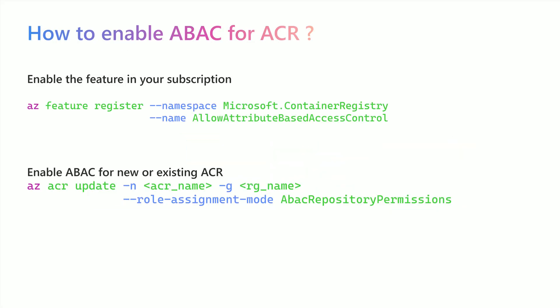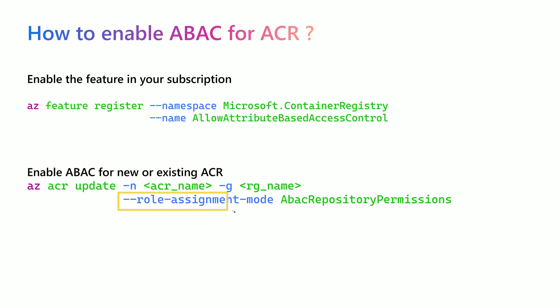This feature is not yet enabled by default — you need to enable it explicitly. There are just two steps. First, you enable the Azure feature for attribute-based access control. Then you enable the feature on your ACR by specifying the role assignment mode to be ABAC repository permissions.